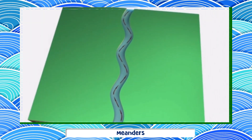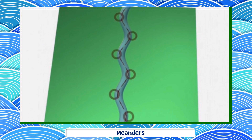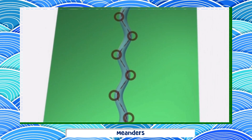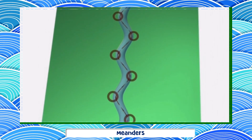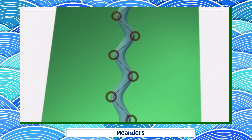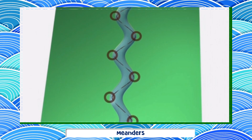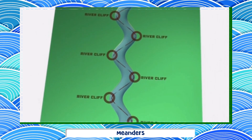The water flows faster on the outside bend of a meander because it has further to travel. Its speed and erosive capacity are therefore greater. This erodes the outside of the meander, producing a river cliff and a deeper channel on that side.